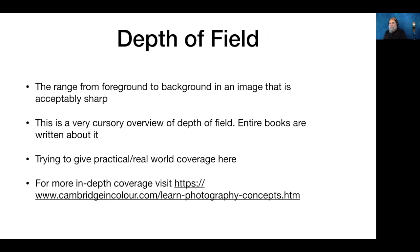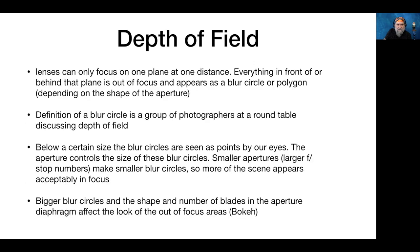Depth of field is the range from foreground to background in an image that's acceptably sharp. It's not an exact science — it depends on a large variety of factors including print size and viewing distance, and there's no hard line where things fall into or out of focus. Lenses can only focus on one plane at one distance at a time; everything in front of or behind that plane is out of focus and appears as blur circles or polygons. The aperture controls the size of these blur circles.